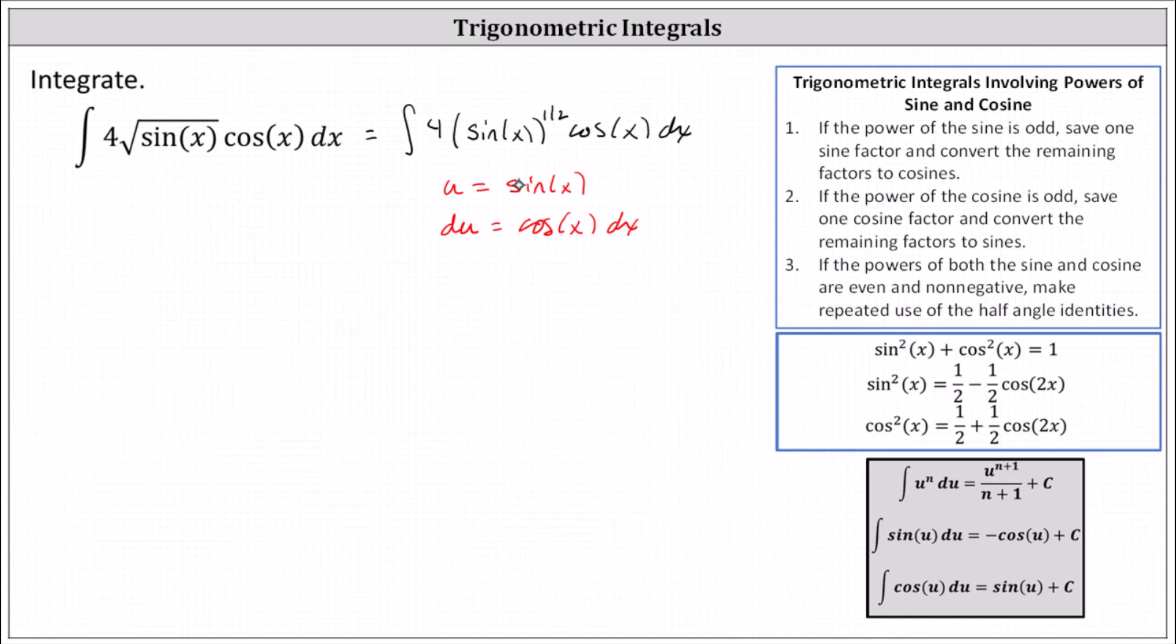So now we can substitute u for sine x and du for cosine x dx. This gives us a much simpler integral with respect to u. We have the integral of 4u to the 1 half du.